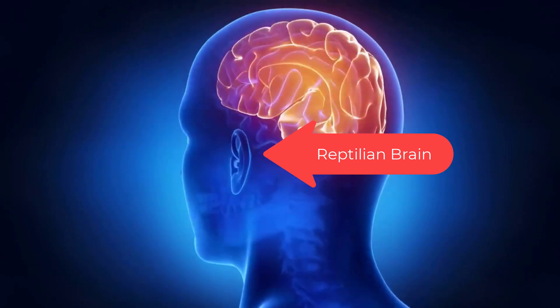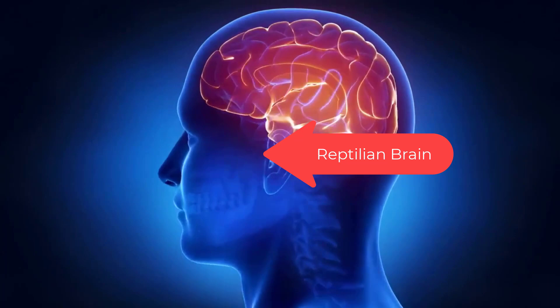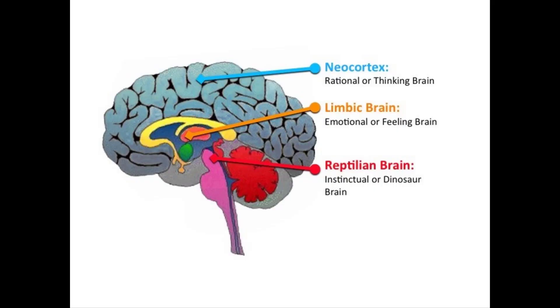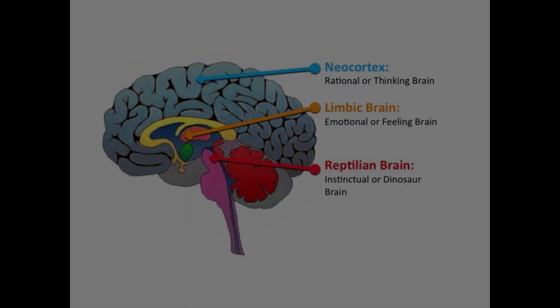The reptilian brain can take into account input from the other brains, but it can also decide faster than the blink of an eye and then use the other brains to justify the decision. The reptilian brain is visual and hardwired into the brain stem.